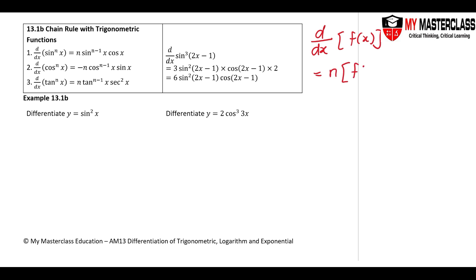The fx inside the chain does not change, n minus 1. Then, we remember to multiply by the differentiated of the bracket. So for a chain rule with trigonometric function, it is also the same.